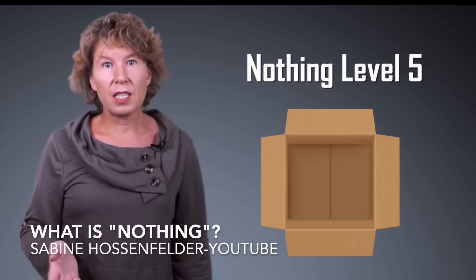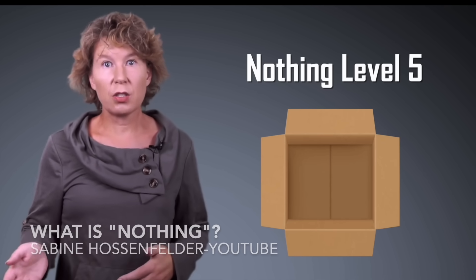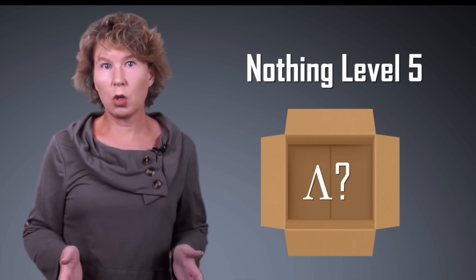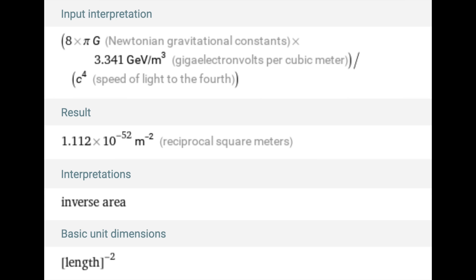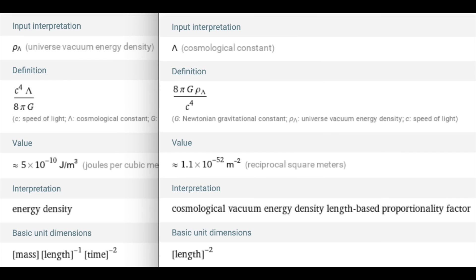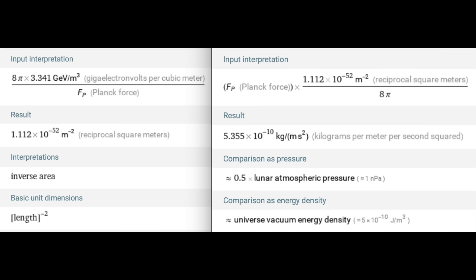Many physicists argue that the vacuum has an energy density and pressure and associate this with the cosmological constant. As I explained in an earlier video, I think this doesn't make sense. The cosmological constant is just a constant of nature which determines the curvature of empty space. Empty space isn't necessarily flat. Talking about the curvature of empty space as if it was energy density and pressure is just a weird interpretation of geometry.